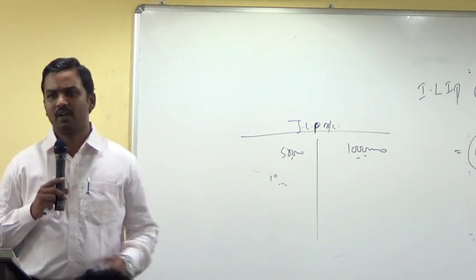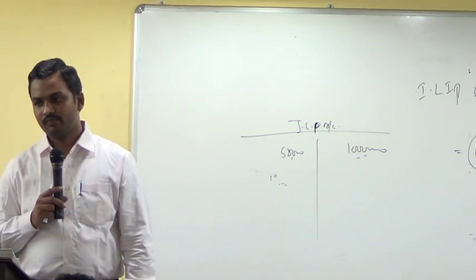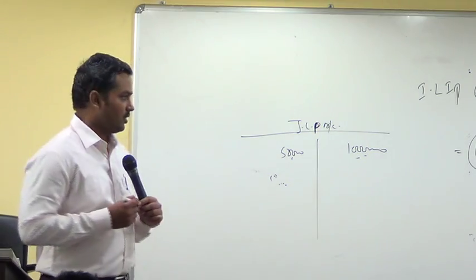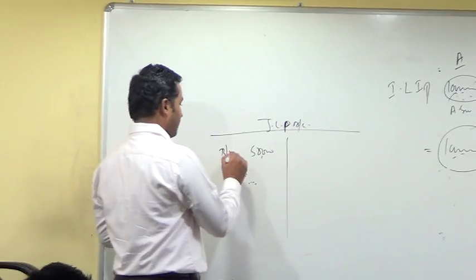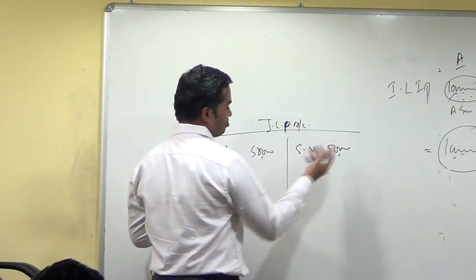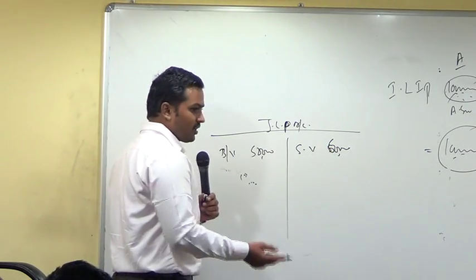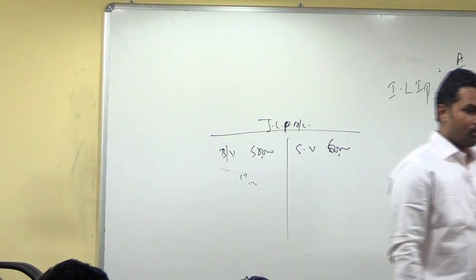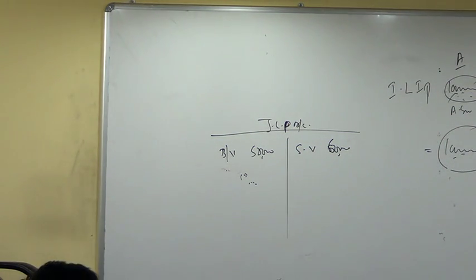This is called the Joint Life Policy Asset Method, where we treat the joint life policy as an asset. Book value will always be written down to surrender value. Every year you compare it with surrender value, and if there is any difference, you write it off.